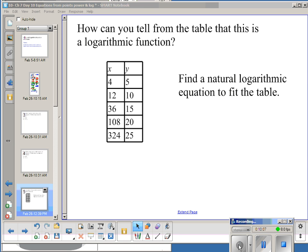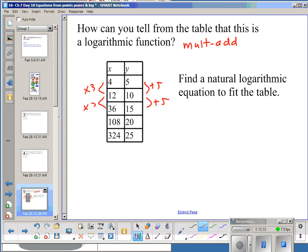All right, so now we're going to move on and do a log function. So how can I tell from this table that it's a log function? Well, log functions have the table property of multiply, add, because it's the inverse of the exponential. Exponentials add in the X, multiply in the Y. So logs will multiply in the X and add in the Y. Right here, if I add 5 and add 5, here I'm doing times 3, times 3, times 3. Okay, so that's my property. So now I want to find a natural log equation. And the keyword here is natural. It tells me I'm looking for an LN. So I want my general form, Y equals A plus B LN of X.